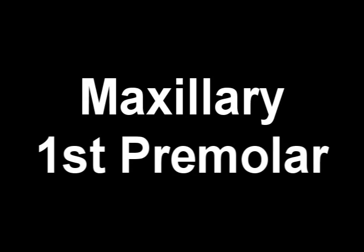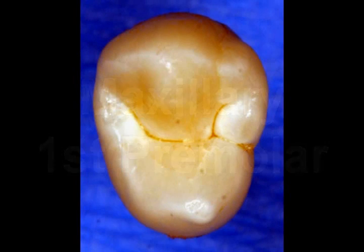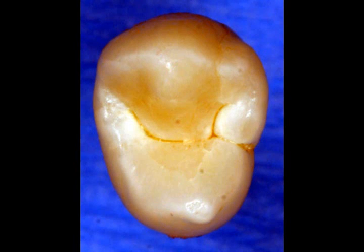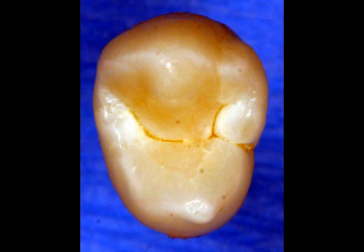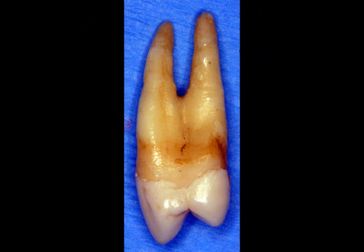Let's now take a look at the maxillary first premolar. The maxillary first premolar, like all maxillary premolars, is oval in shape. When looking at the occlusal surface of a maxillary premolar, you'll see that the buccal surface is wider than the lingual surface. When you look at the interproximal of a maxillary premolar, you'll notice that the buccal cusp is taller than the lingual cusp. Just remember that the buccal cusp tips tend to show wearing, so this may not be obvious.